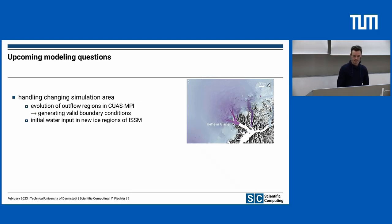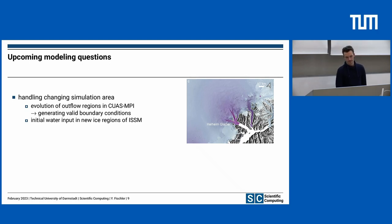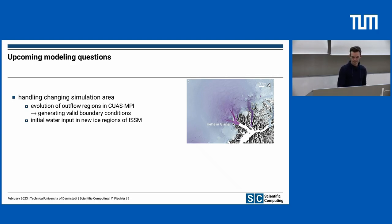During development of our interface, some modeling questions came up. The most interesting one is handling the changing simulation area. If the ice sheet shrinks, we get new borders and need to generate new outflow regions. As you can see in this picture, we have violet regions which represent a high water flux, and the water runs from the ice sheet to the surrounding white area — like a river. When the ice sheet gets smaller, we have to regenerate the boundary conditions and create new regions where water outflow exists.